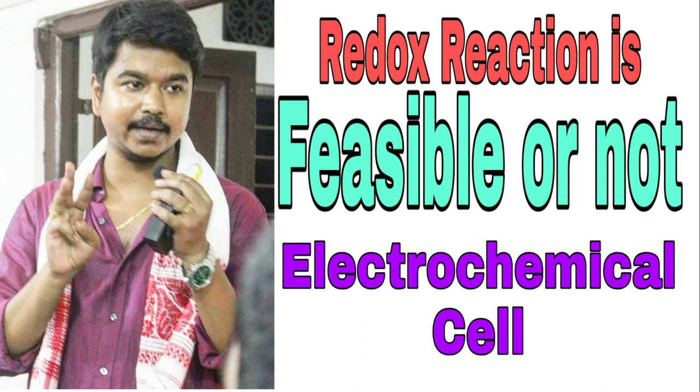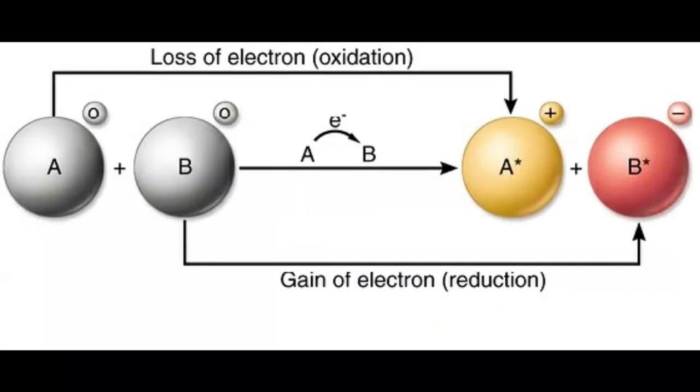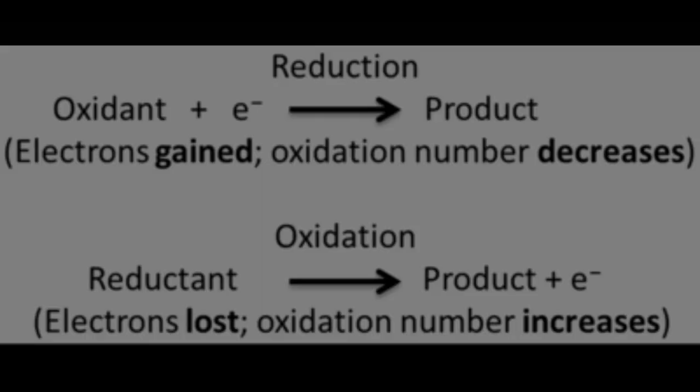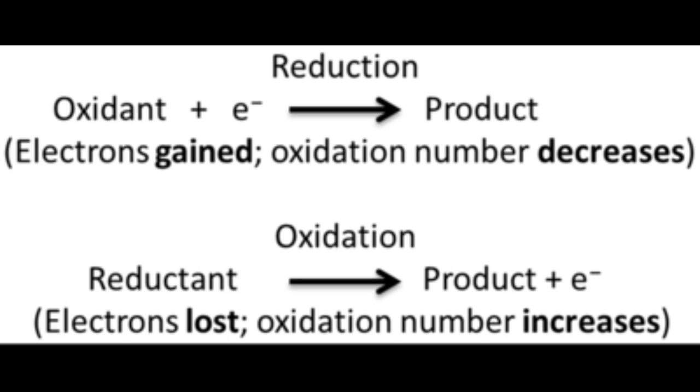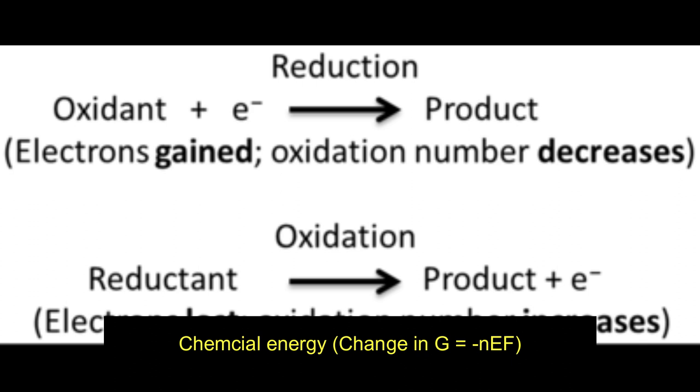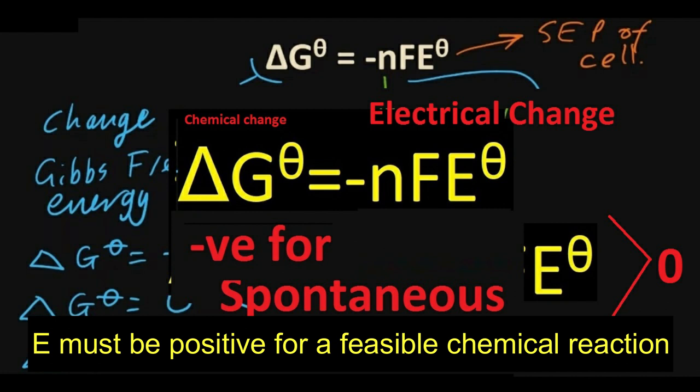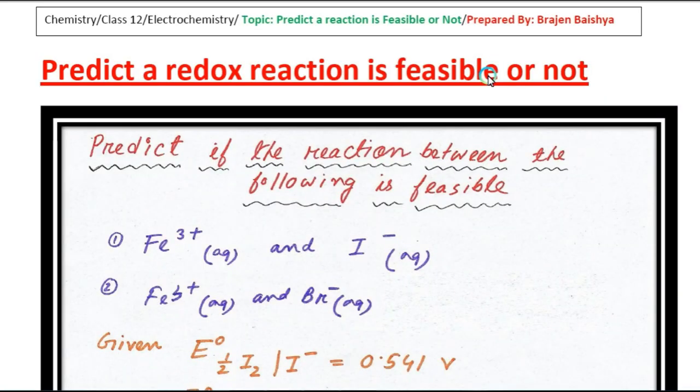So, as we know, an electrochemical cell is a device which can convert chemical energy into electrical energy. If the standard electrode potential E° is positive, that means E° should be greater than zero, the reaction is feasible.